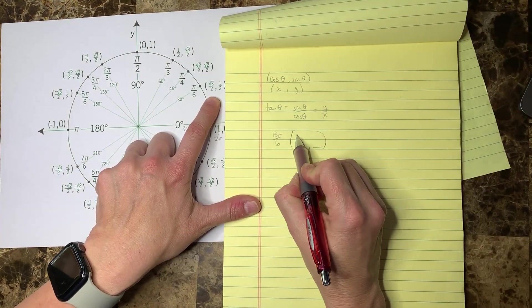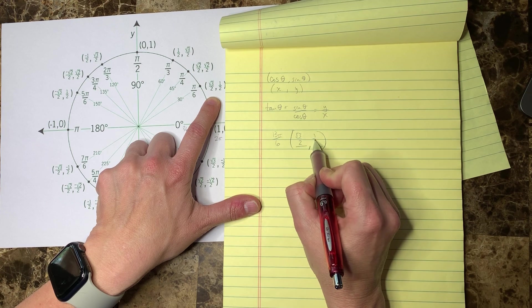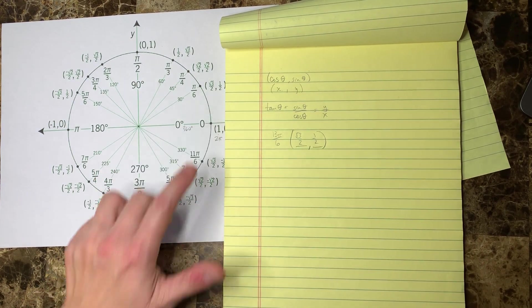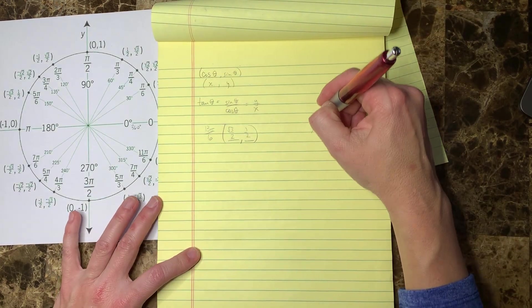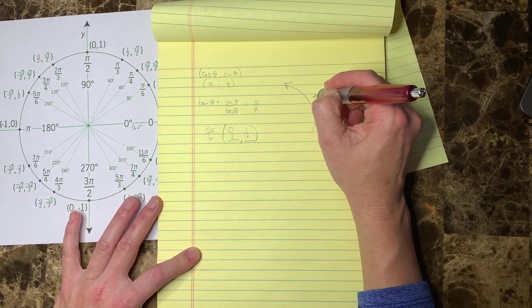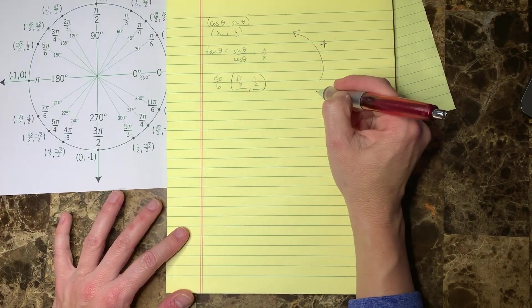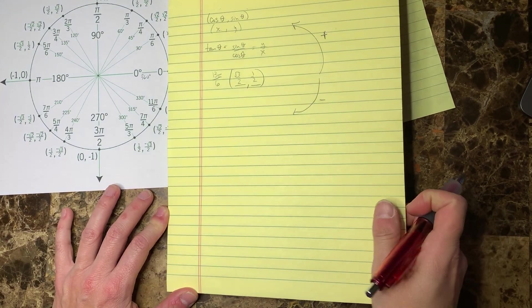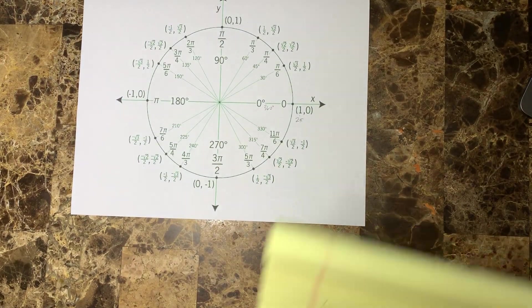Here's something else that's cool: remember how when we derived the unit circle everything went in this direction for positive angles? So you can go in this direction for negative angles.